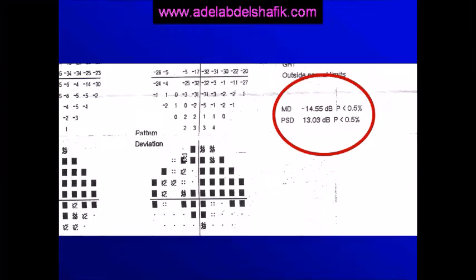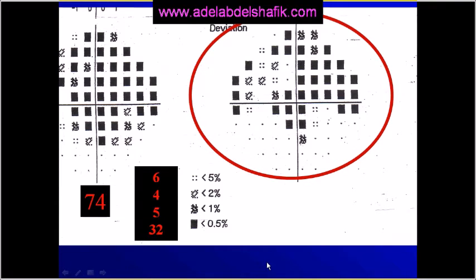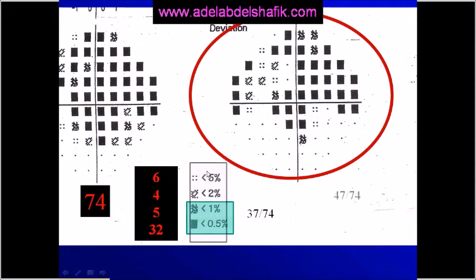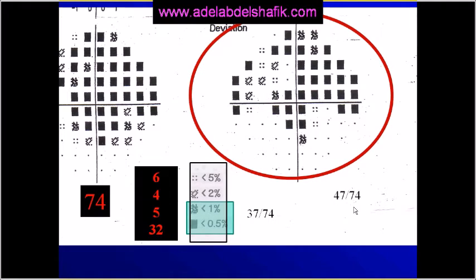Let's apply this to this field. The mean deviation is more than 12, so this is severe glaucoma. Looking at the pattern deviation: the total examined points are 74. Those with probability 0.5% are 32, 1% are 5, 2% are 4, and 5% are 6 points. The total points showing probability of 1% or less is 37, and for 5% it's 47 out of 74. According to this, it's severe glaucoma.